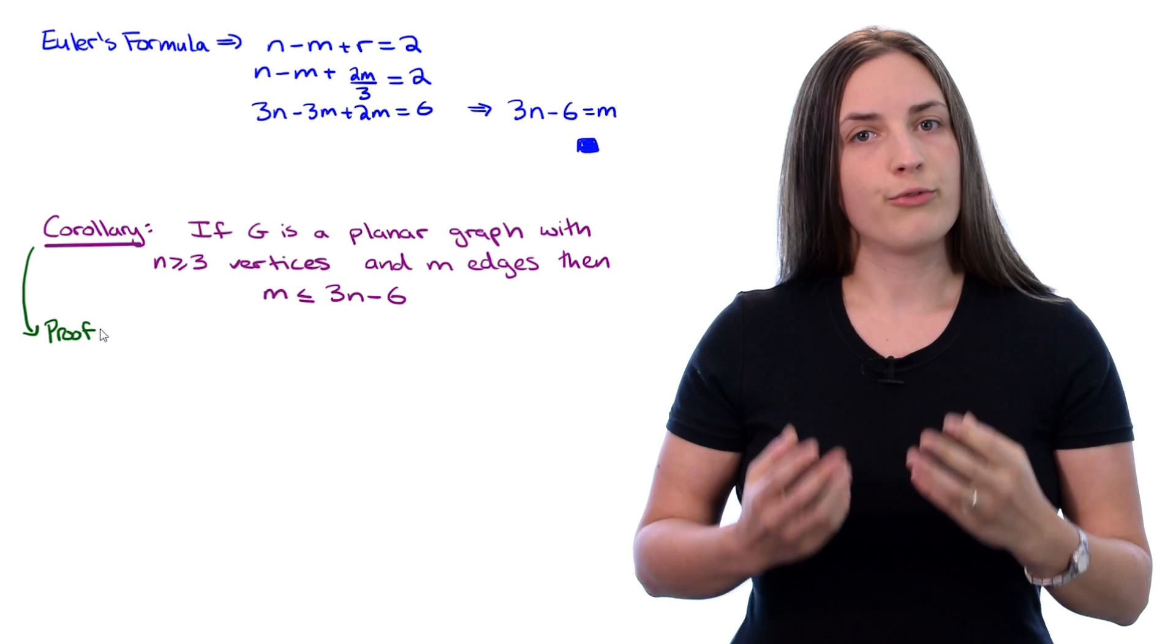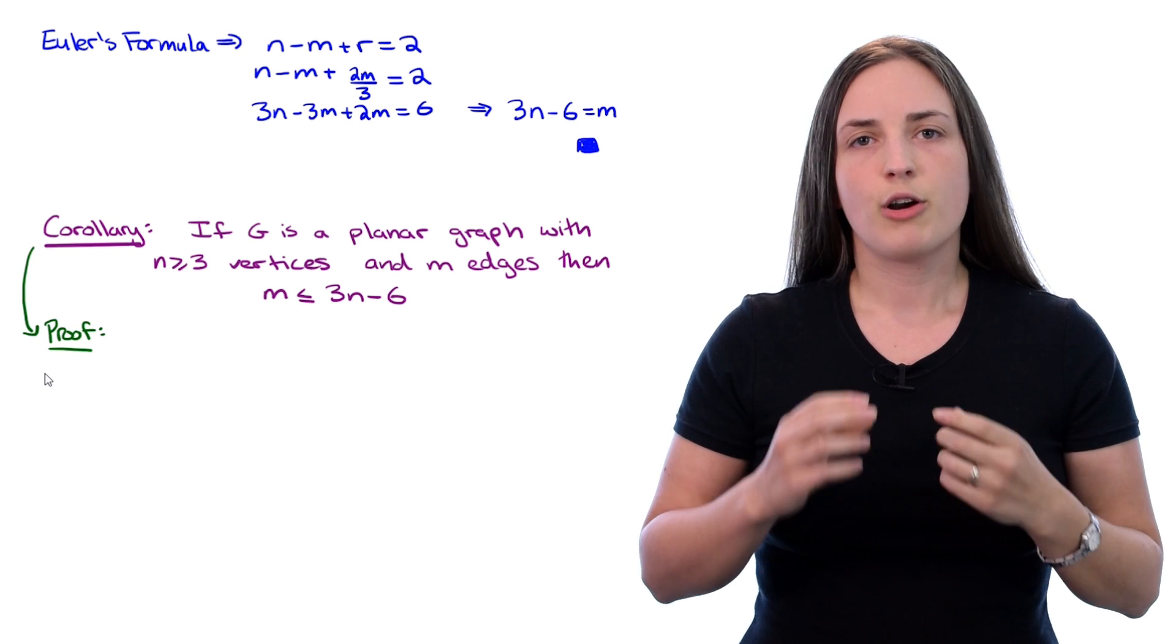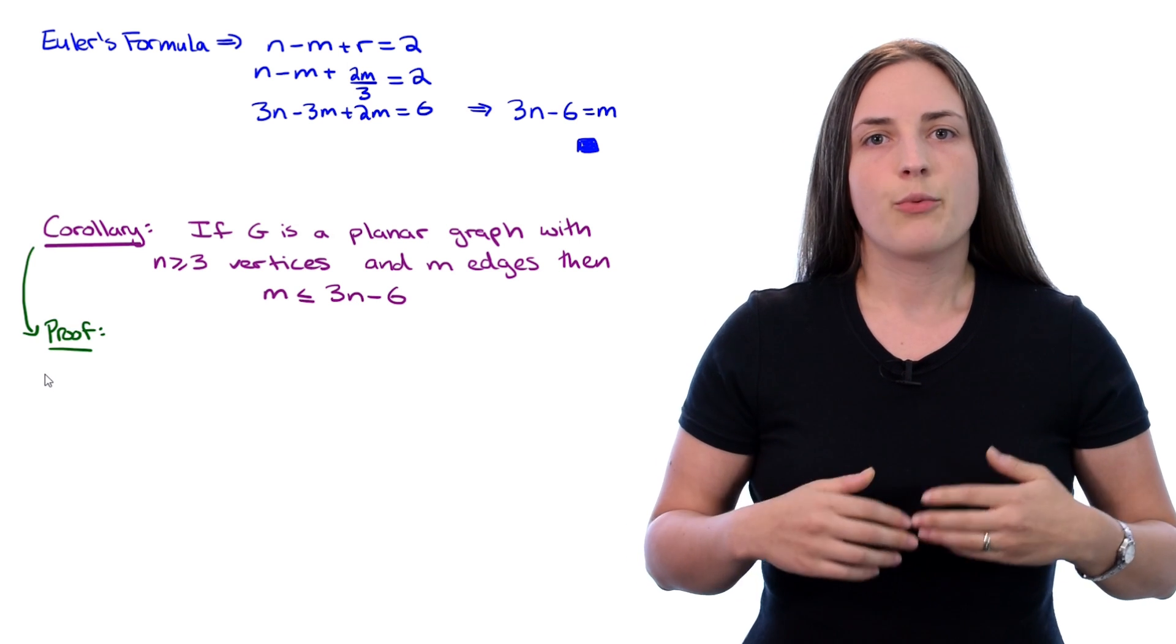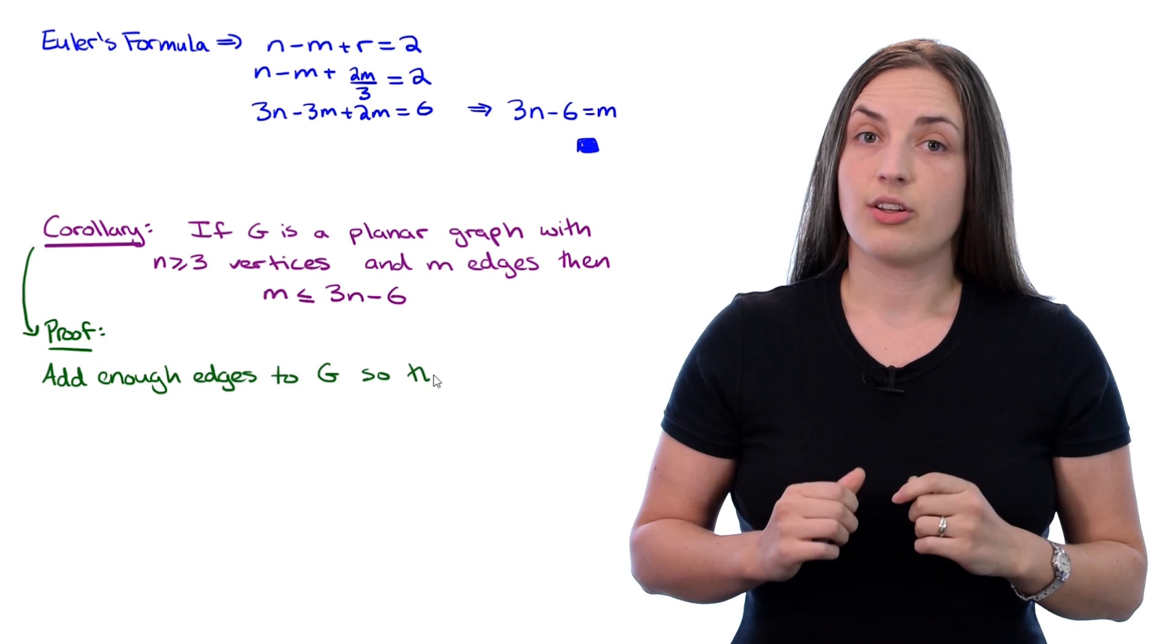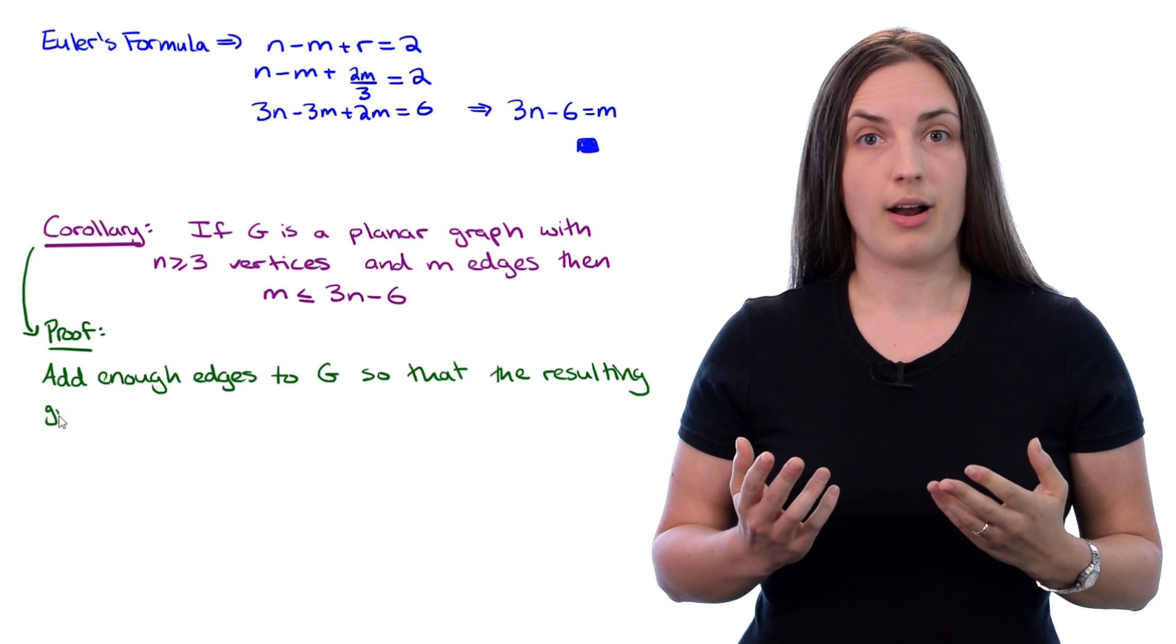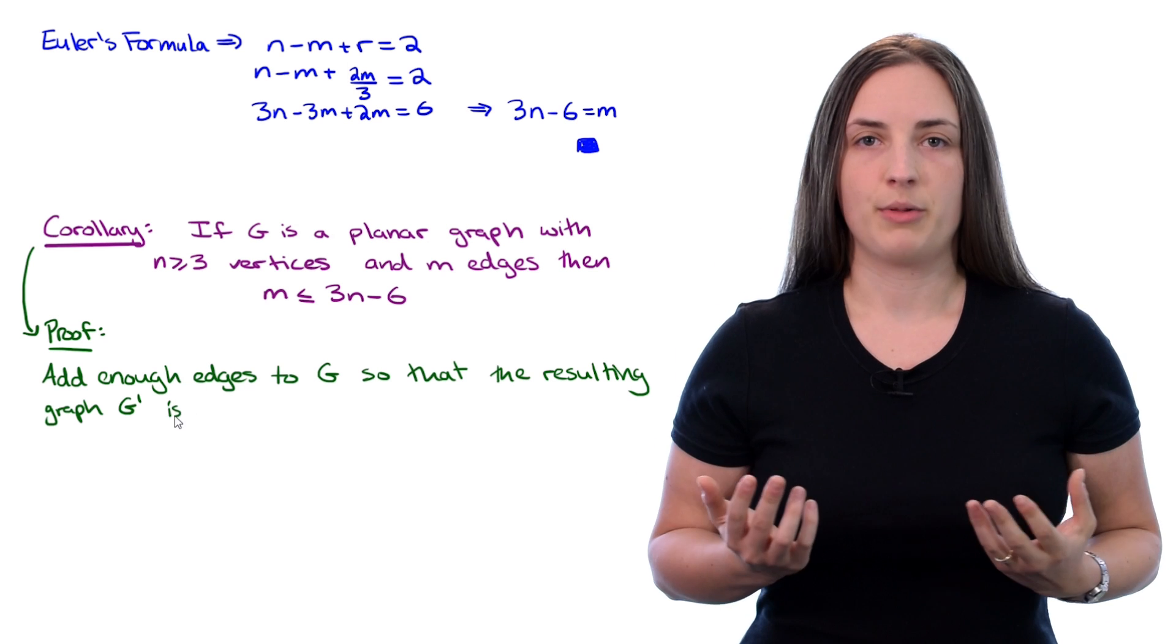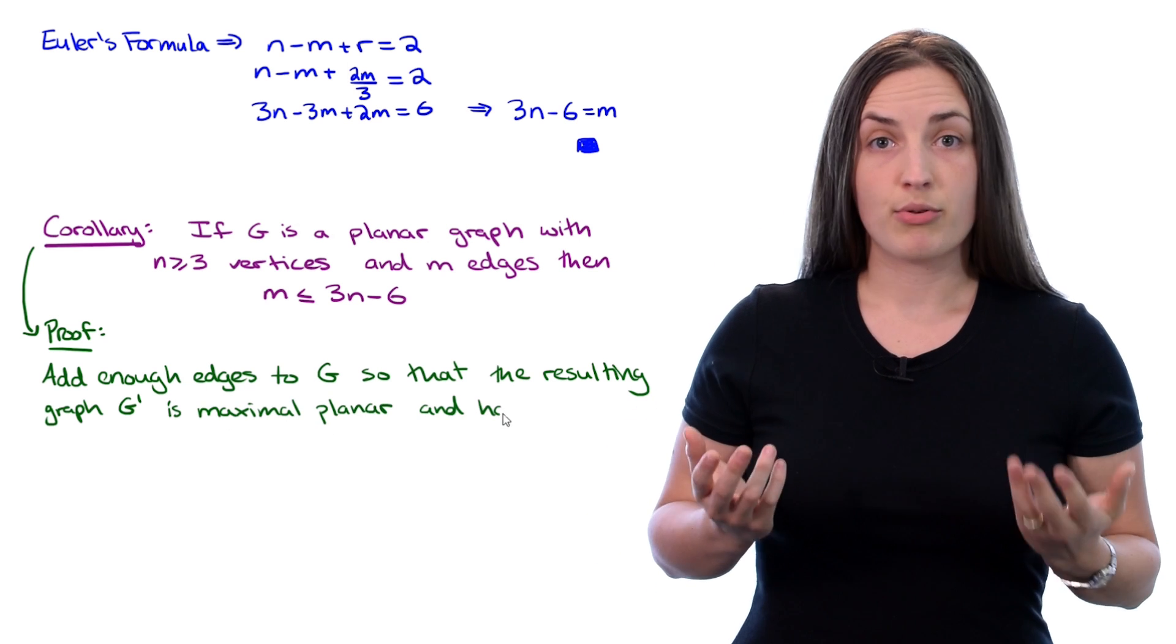But let's take a look at a more formal proof. So we have our planar graph G, and we add edges to G until the resulting graph, G prime, is maximal planar and has M prime edges.